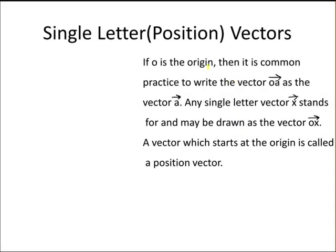If O is the origin, that's the point (0,0), it's common practice to write the vector OA as the vector A. So any single letter vector X stands for the vector OX and can be drawn from O to X. A vector which starts at the origin is called a position vector.